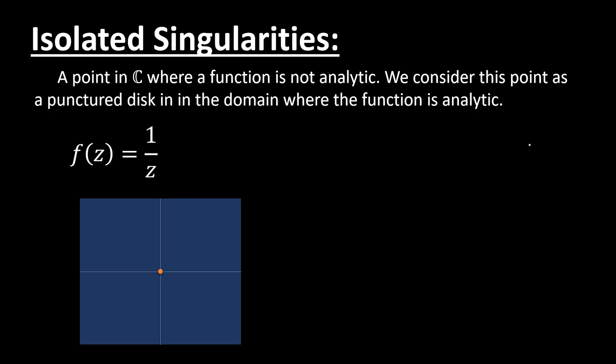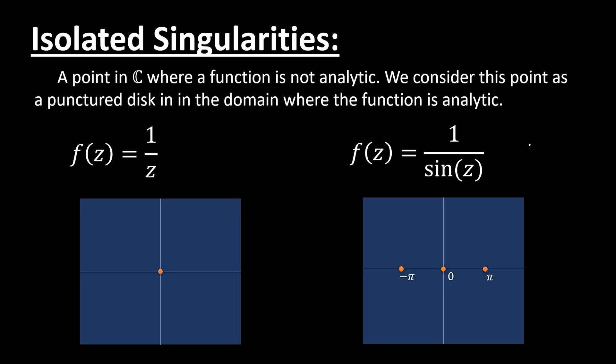But complex functions can have much more than one isolated singularity. Take, for example, the function 1 on sin z. This function has singularities at 0, plus or minus pi, and continuing integer multiples of pi. These are all isolated singularities, whereas the function is analytic everywhere else in the complex plane.